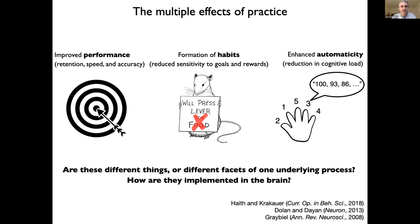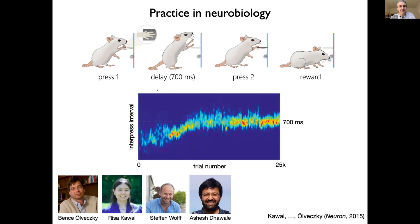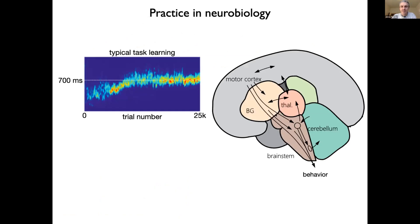So in order to probe these questions, we've teamed up with the Ovekski lab at Harvard University. We'll actually have a talk on some of this work by Stefan Wolf later in the session. In a recent series of papers, they've been training rats to perform this relatively simple task in which the rat has to press a lever twice with a precise time delay between presses in order to obtain a water reward. And here's what learning looks like. After 10,000 trials or so, the rat finally gets this and can produce this target interval reliably. And the group has been asking, what is the involvement of different brain areas, different parts of the motor circuit in this particular behavior.